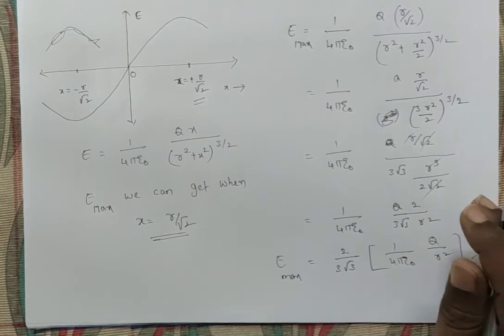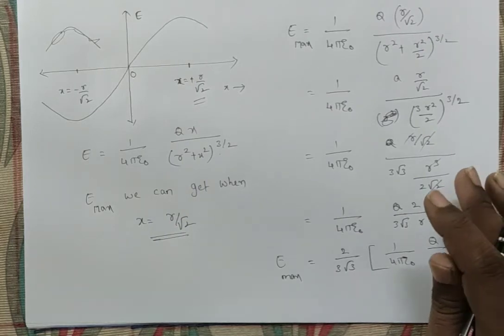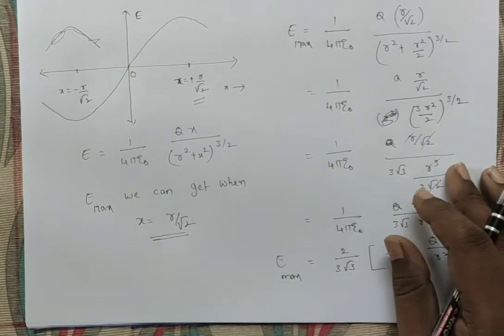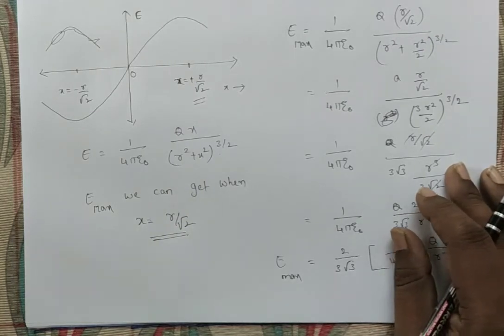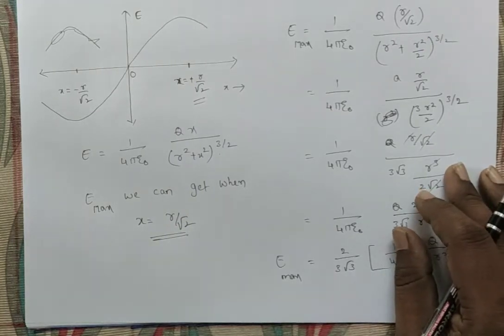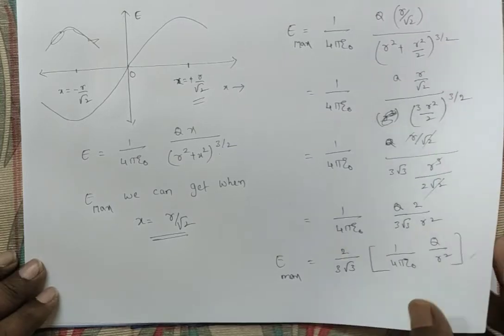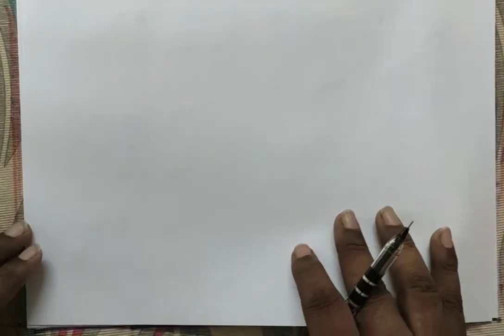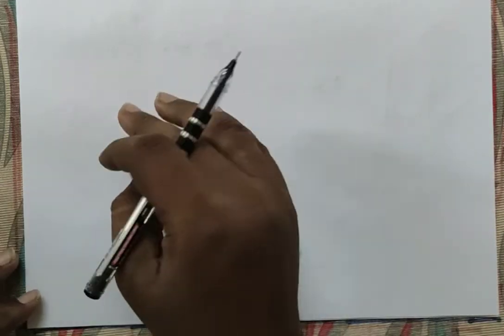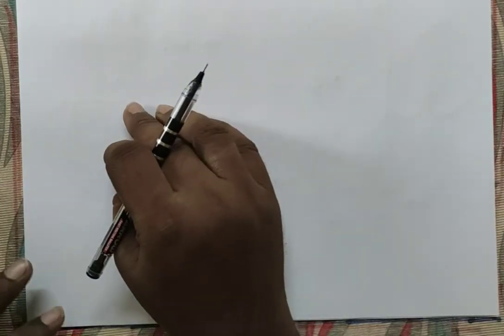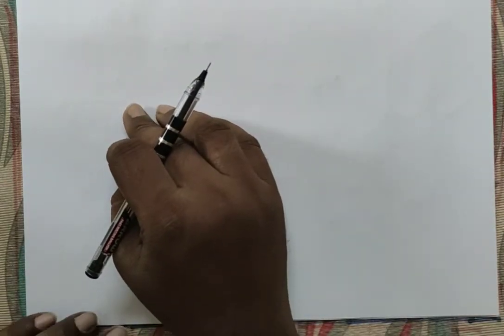Next we go for another case: instead of a complete circular ring, if an arc-shaped ring is there, what is the electric field intensity due to a charged arc at its center?